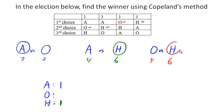And so A earns 1 point, O earns 0 points, and H earns 2 points. Whoever earns the most number of points wins, and so in this case, H wins under Copeland's method.